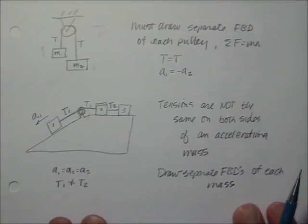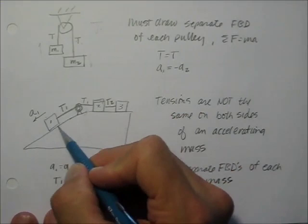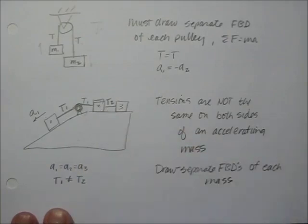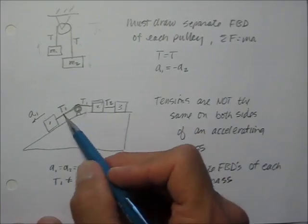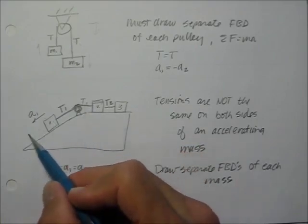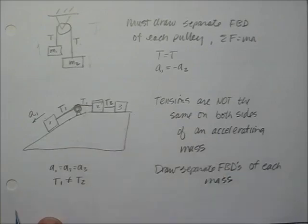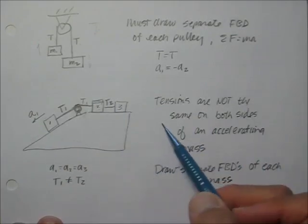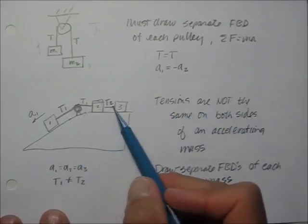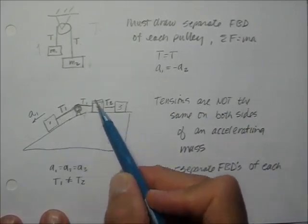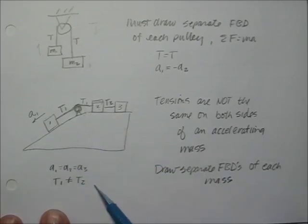How about boxes tied together? Here's a simple inclined plane illustration. Say we have a box trying to slide down, there's a pulley, and the rope goes over the pulley with a couple more boxes on the horizontal portion. The pulley changes the direction but keeps the same tension on both sides. However, the tension is not the same between the horizontal boxes. To analyze this, you draw separate free body diagrams. Since they are tied together, they all have the same acceleration: A1 equals A2 equals A3. But the tensions are not the same.